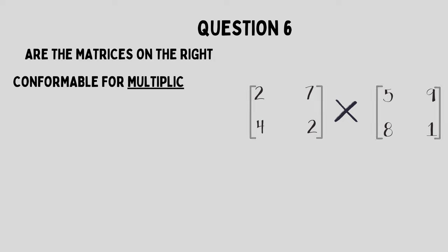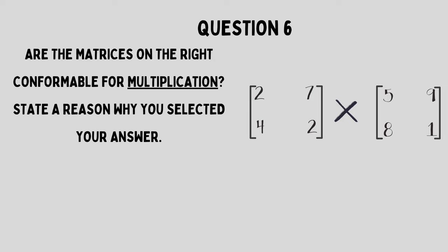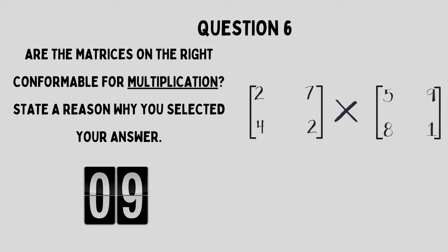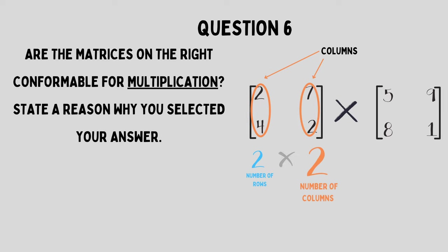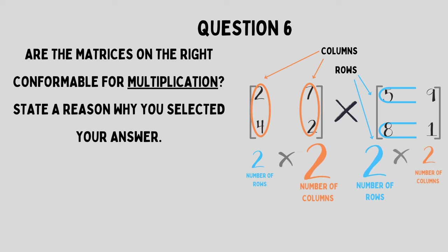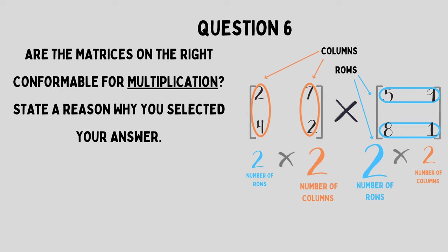Number six: Are the matrices on the right conformable for multiplication? Yes, these are. After we write the order of each matrix, we realize that the two numbers in the center — meaning the number of columns in the first matrix — is indeed equal to the number of rows in the second matrix. If those two numbers were different, we would say they are not conformable. But in this case, they are conformable.